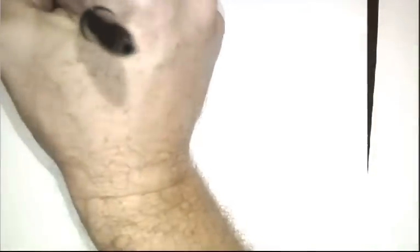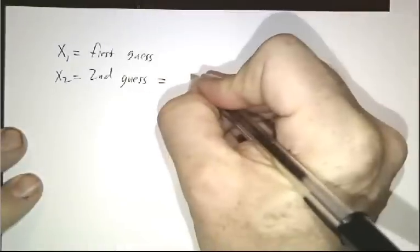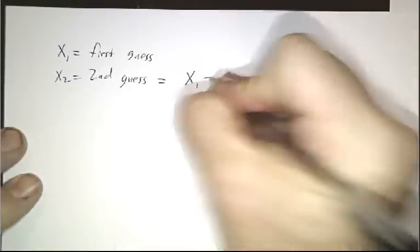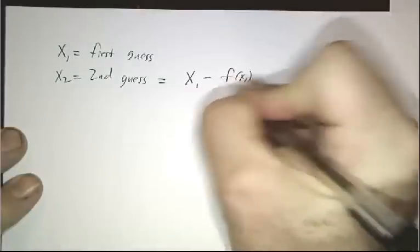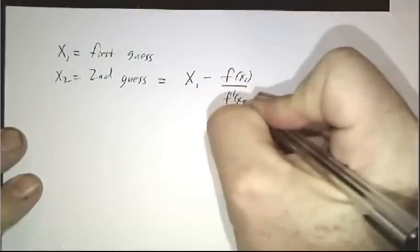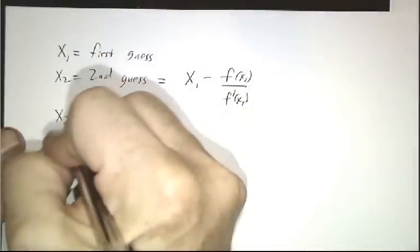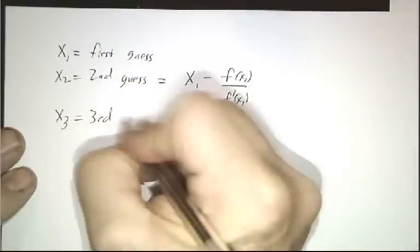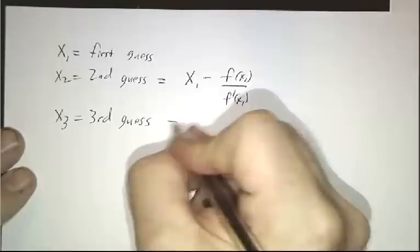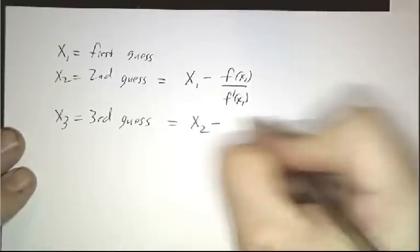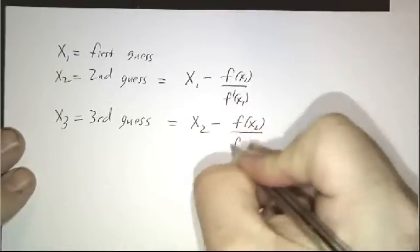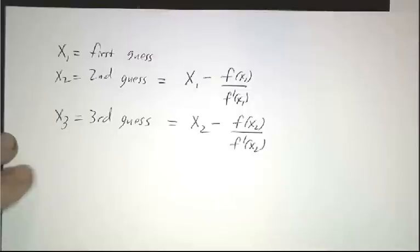x1 is your first guess. x2 is your second guess, which equals x1 minus f of x1 divided by f prime of x1. x3 is your third guess, which equals x2 minus f of x2 divided by f prime of x2. And you keep going.